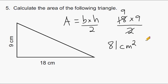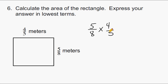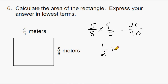Let's go to number 6. To find the area of this rectangle, we multiply the length of 5 eighths by the width of 4 fifths. Multiplying the numerators gives 20, and the denominators give 40. Since 20 is exactly half of 40, our answer is 1 half square meters. That one was pretty easy — let's go to number 7.